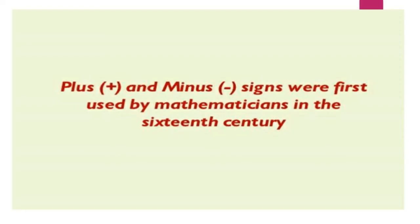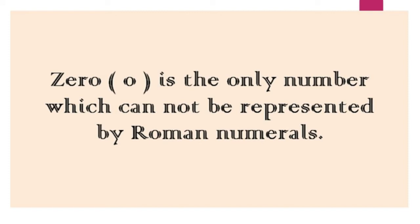Let us see some important facts in Maths. Zero is the only number which cannot be represented by Roman numerals — we cannot write 0 in Roman numbers. That is the most important fact. Also, the plus and minus signs were first used by mathematicians in the 16th century.